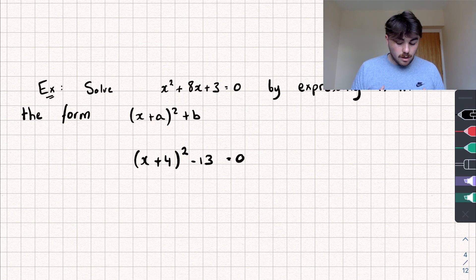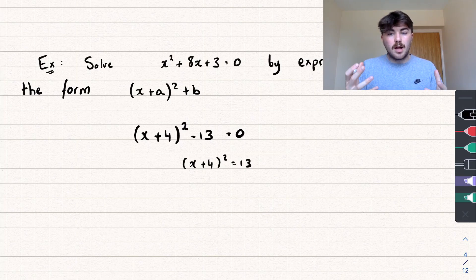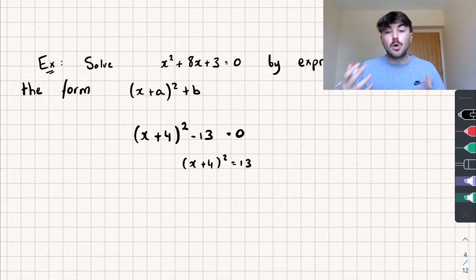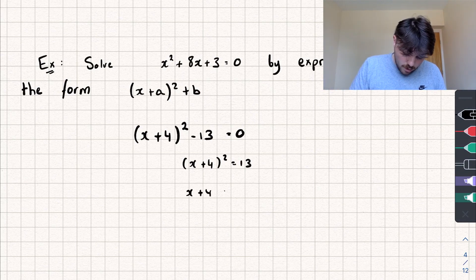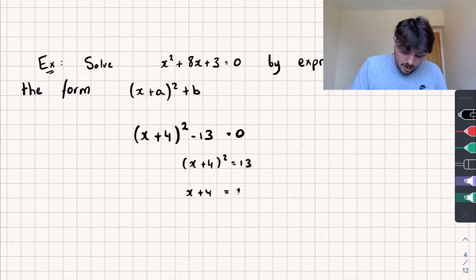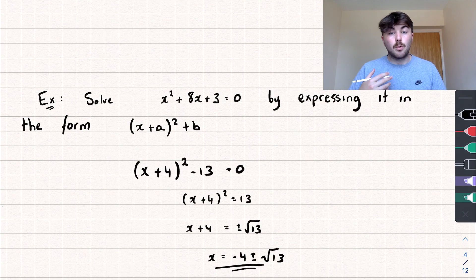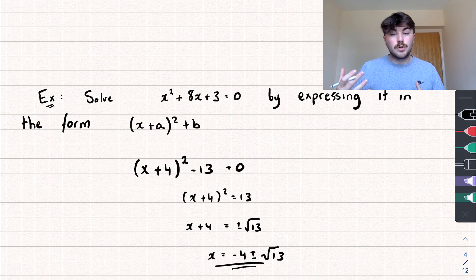Adding 13 to both sides gives us x plus 4, all squared, is equal to 13. To undo the square we square root both sides — and remember, because we're taking the square root, we need to take the positive and negative — giving x plus 4 equals plus or minus the square root of 13. Subtracting 4 from both sides gives x equals negative 4 plus or minus root 13. So the two solutions are x equals negative 4 plus root 13, or x equals negative 4 minus root 13.